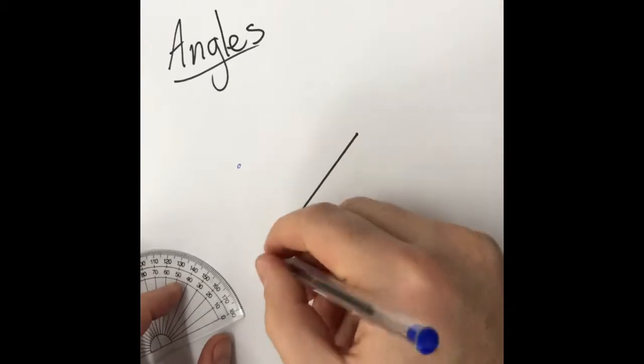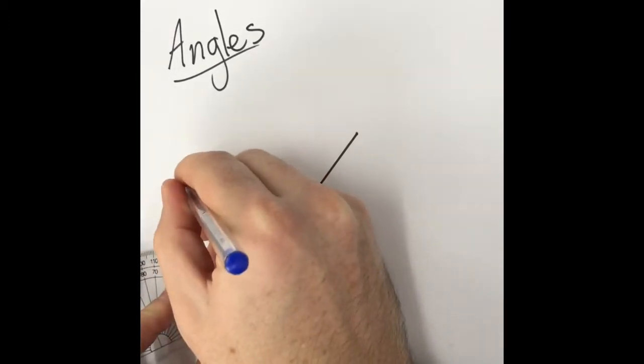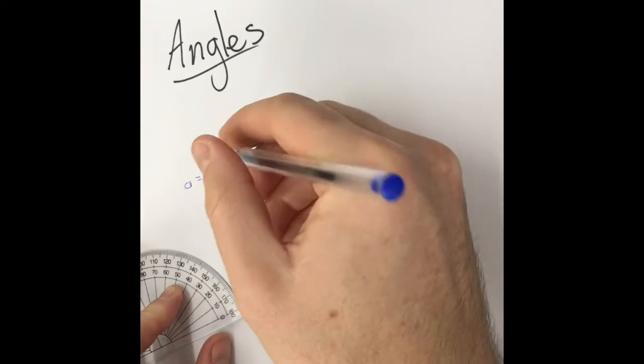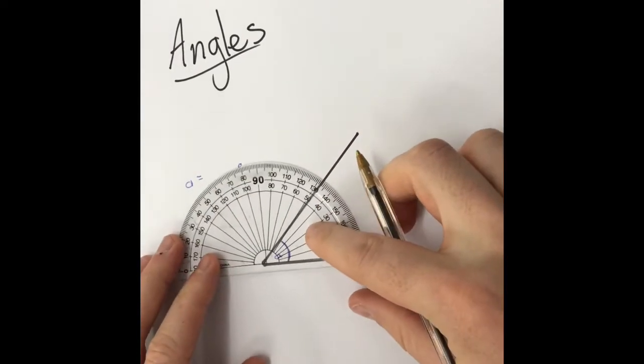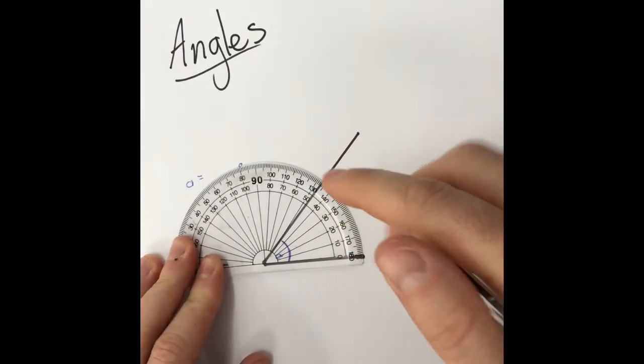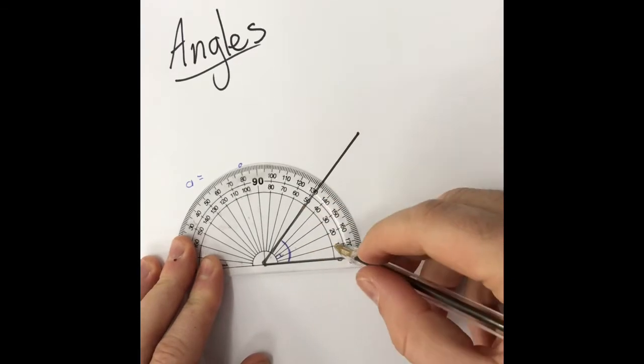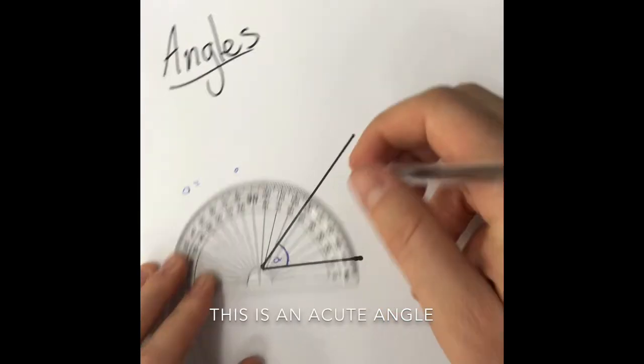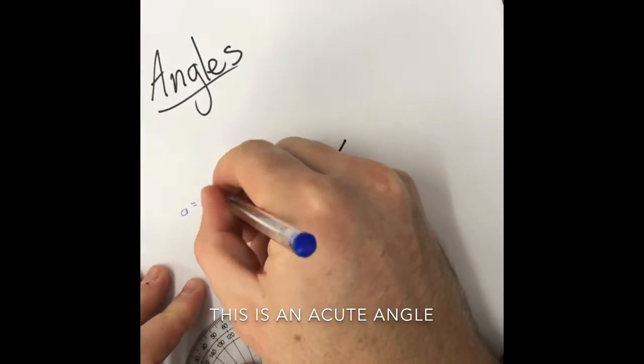Alright, so this angle, let's call it A. A equals, let me just double check, 10, 20, 30, 40, 50 degrees.